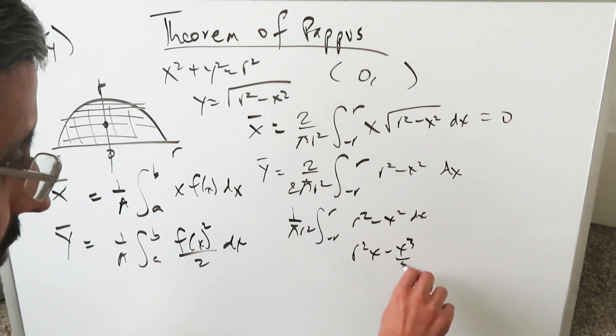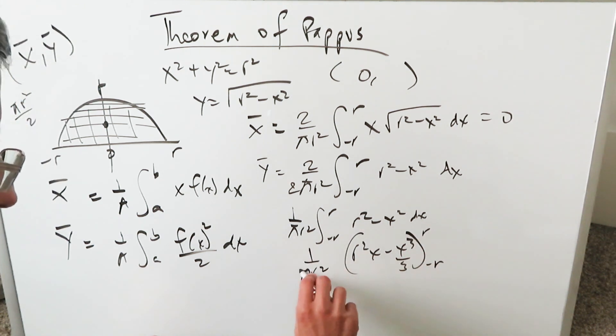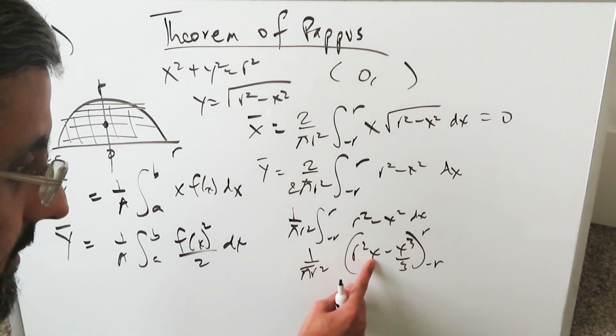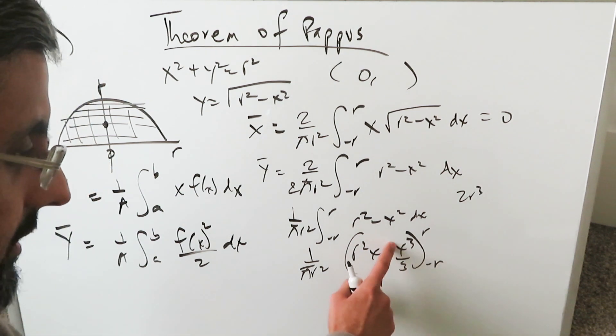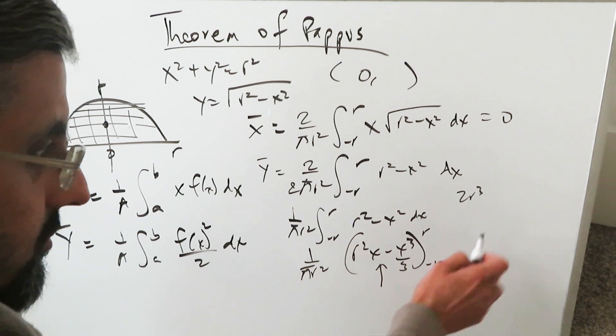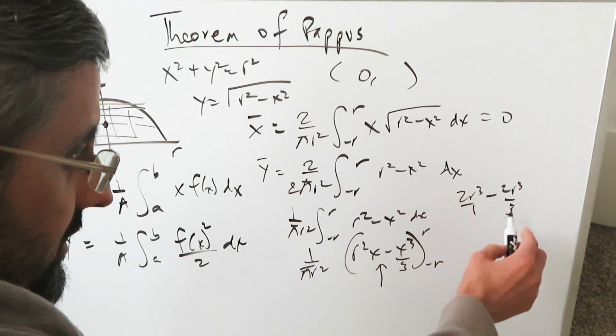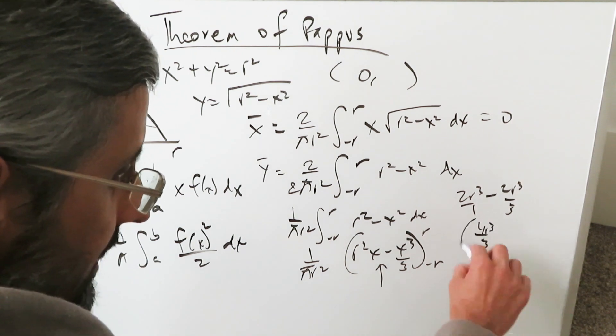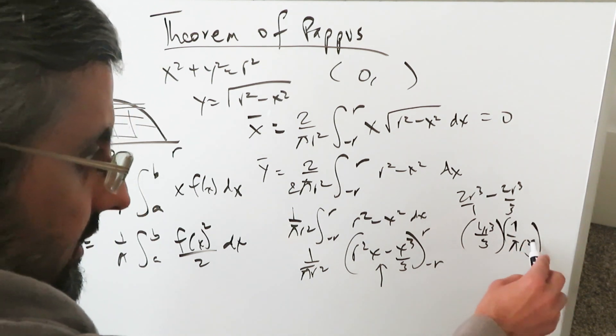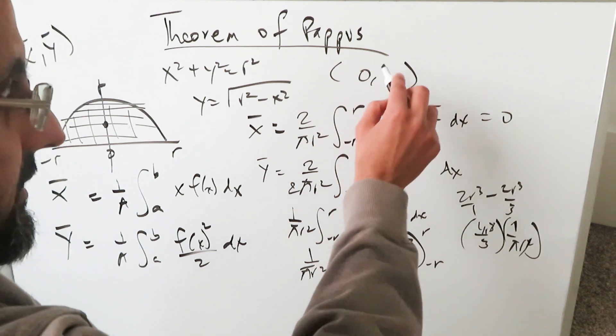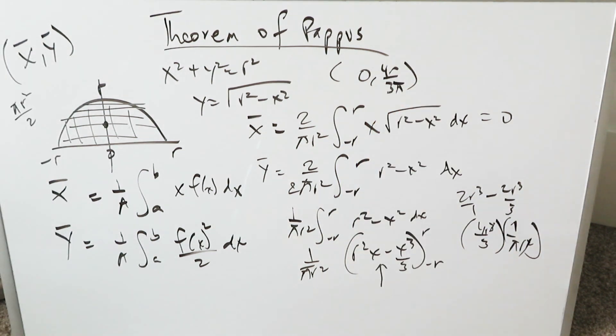You'll have r²x - x³/3. Looking at it from r and -r, 1/(πr²). Integrated, you have r - (-r), which is 2r³. Then you have r³ - (-r³), which is 2r³/3. Minus 2r³/3. Do a common denominator. You'll have 6r³ - 2r³, which is 4r³/3. That'll multiply with this 1/(πr²). You can simplify the r², and that will cancel out. You'll have 4r/(3π), and that's your ȳ value of your centroid.